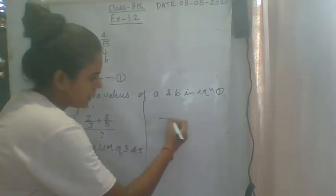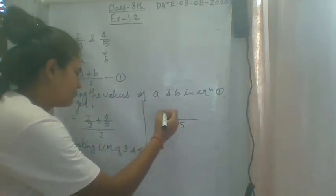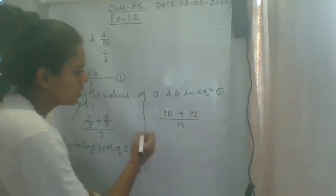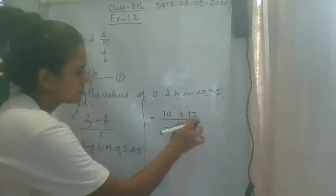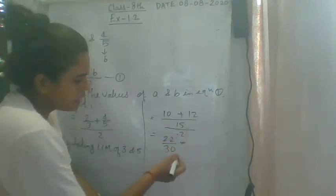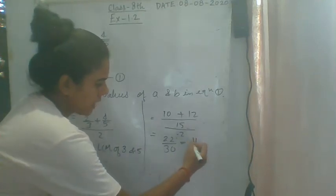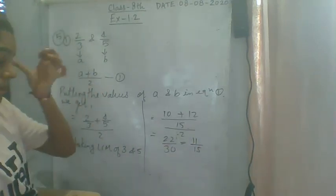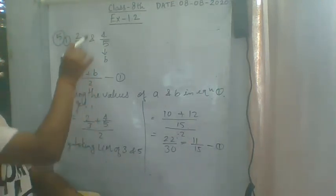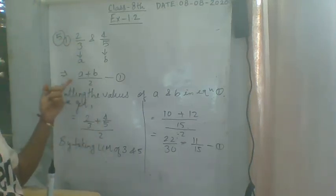The LCM of 3 and 5 is 15. So 2 by 3 becomes 10 by 15 and 4 by 5 becomes 12 by 15. We get 10 plus 12 divided by 15, all divided by 2, which is 22 divided by 30. We have to write this rational number in its lowest term, so the answer is 11 by 15. This is a rational number between 2 by 3 and 4 by 5. Other rational numbers can also be found using the same formula.